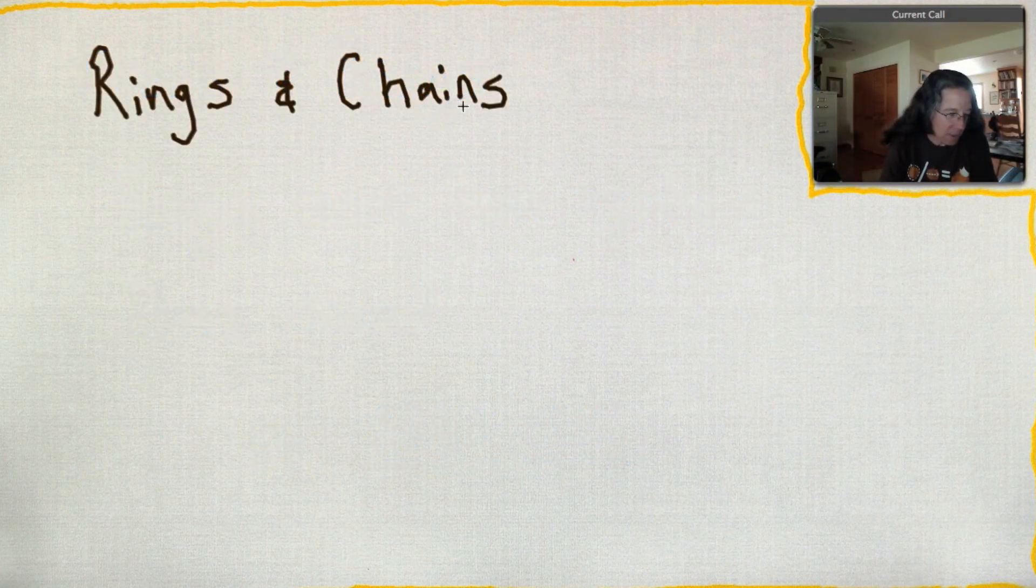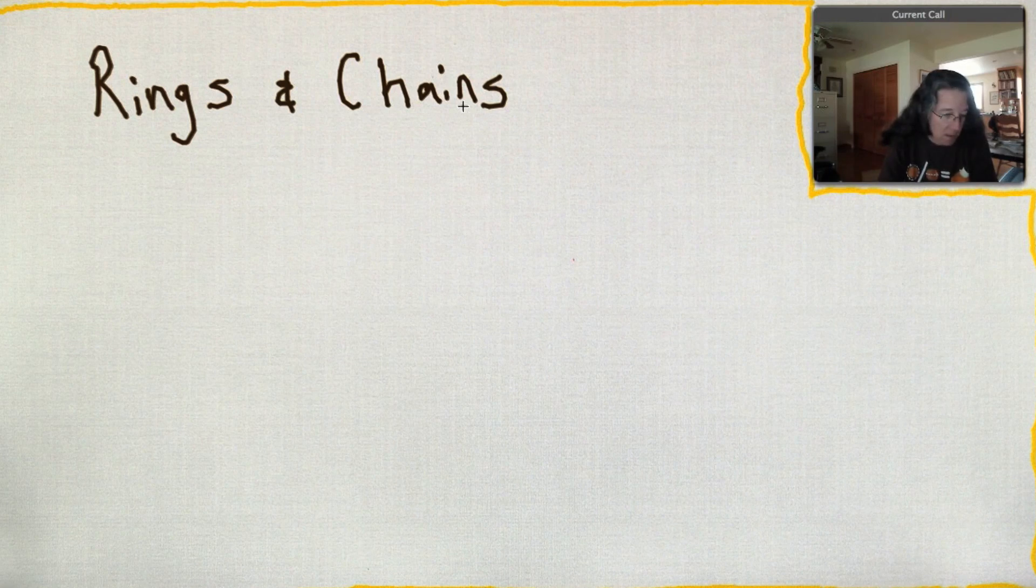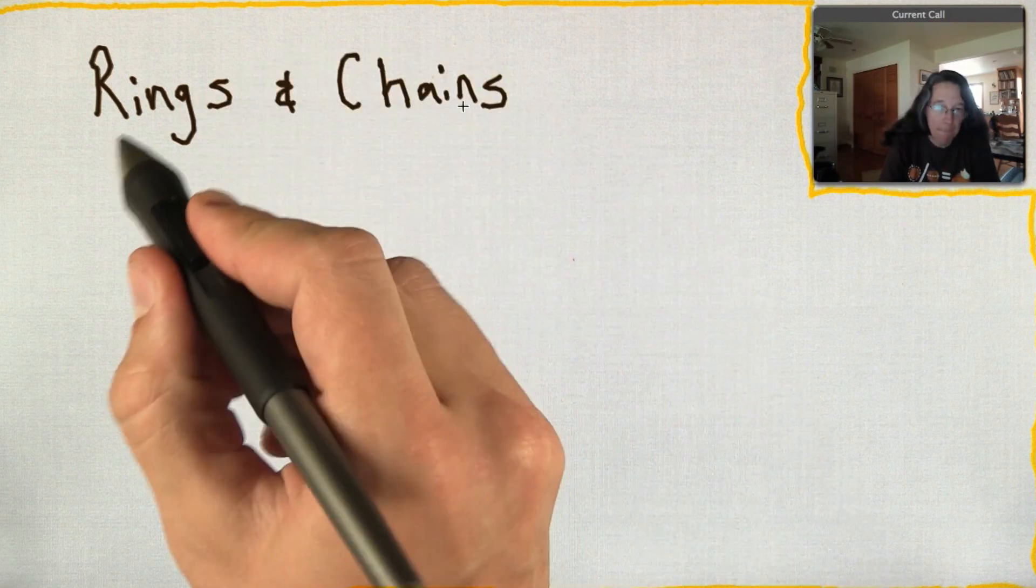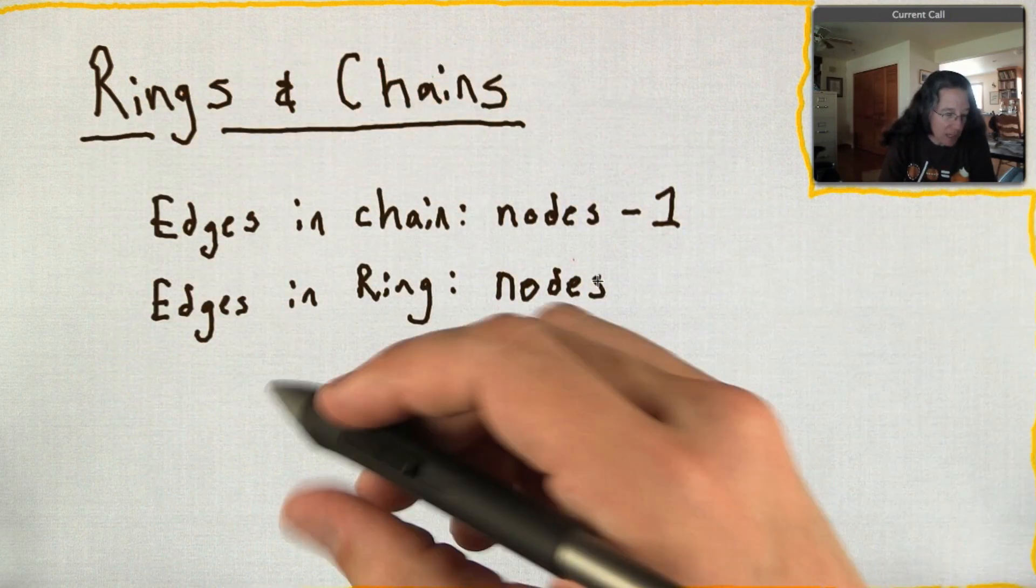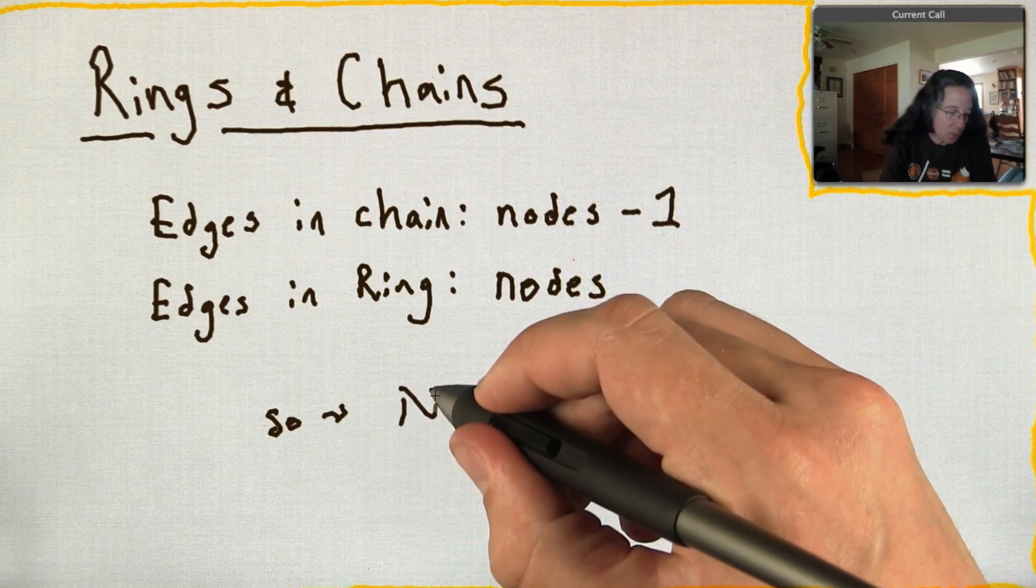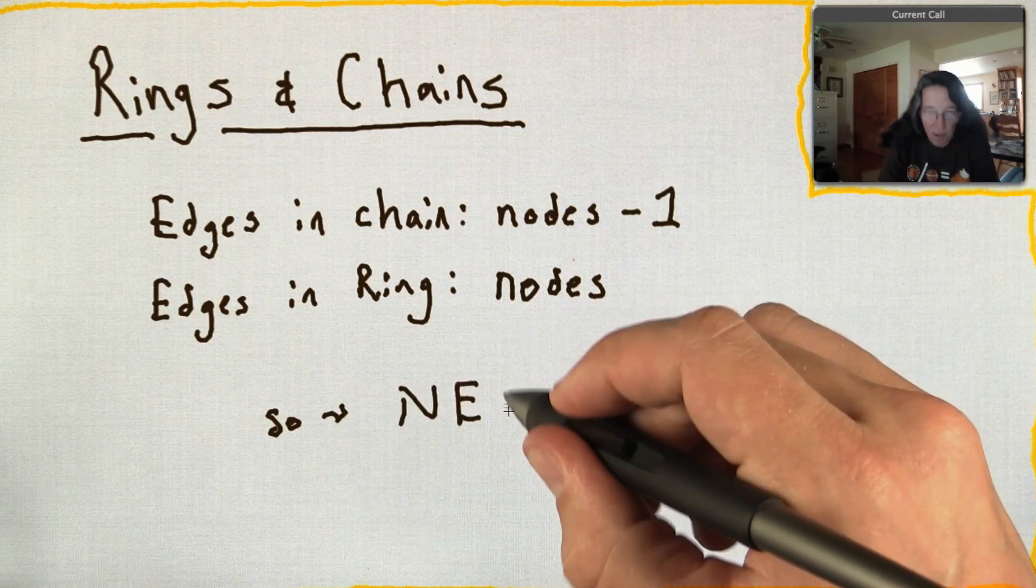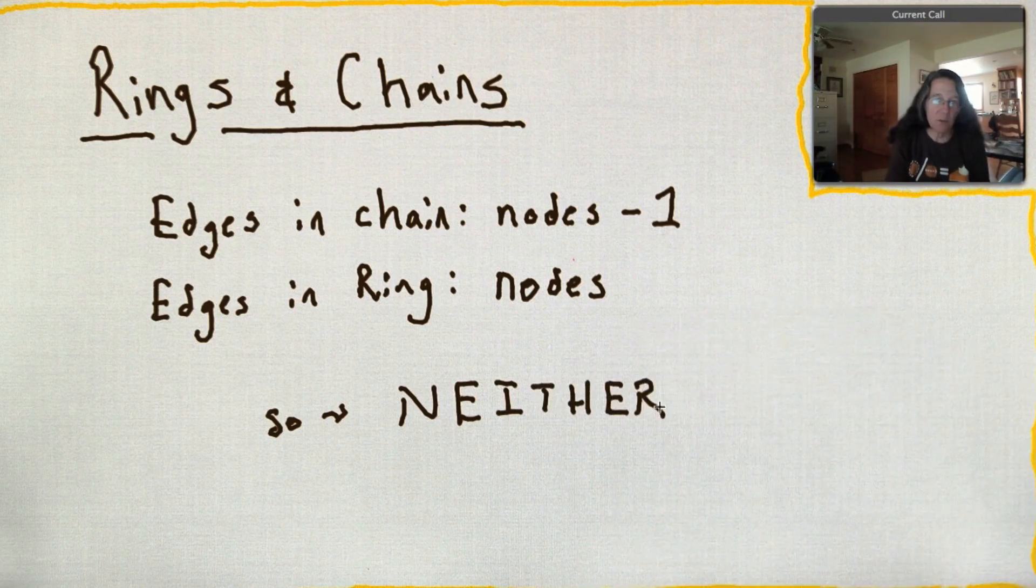Never got a really specific definition of a chain besides just the example, which was enough. But yeah, same idea. Kind of a chain doesn't have a cycle, whereas a ring does. I mean, the other thing we got definitely was that the edges in a chain is the number of nodes minus one. And the edges in a ring is equal to the nodes. Therefore, there can be no crossover between them. Yeah, they're mutually exclusive.